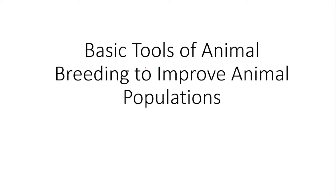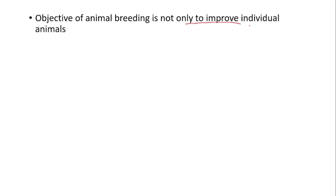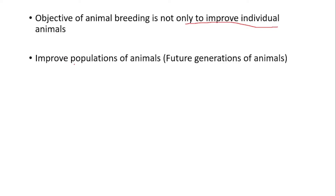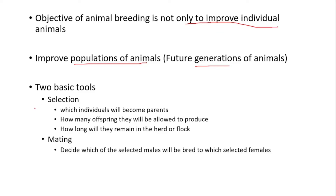As you know, the major objective of animal breeding is to produce offspring with desirable traits. Animal breeders are not only interested in improving individual animals but are always interested in improving the population, especially the next generation. To improve the population, animal breeders mainly use two different tools: the first and very important tool is selection, and the other tool is mating.